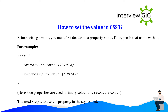How to set a value in CSS3? Before setting a value, you must first decide on a property name. Then prefix that name with -- (double dash). For example: :root { --primary-color: #752914; --secondary-color: #6397af; }. Here two properties are used: primary-color and secondary-color. The next step is to use the property in the style sheet.